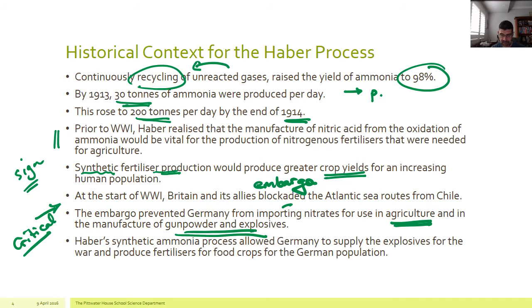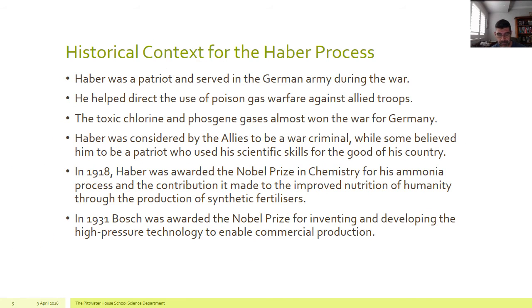As a result of that blockade, key materials required by the Germans were not able to get through. Because nitrates in particular were so critical for both agriculture and the war effort, some alternative had to be found. It was Haber's synthetic production of ammonia that allowed Germany to supply not only explosives for their war effort, but also food crops to feed the German people. However, Haber's involvement in developing chemical warfare gases — chlorine and phosgene — had him pegged by some allies as a war criminal.